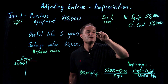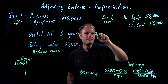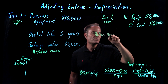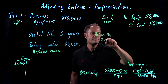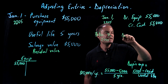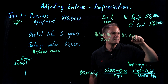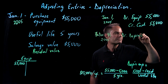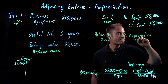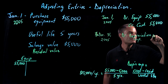So on December 31st, 2005, the company is going to debit Depreciation Expense for $10,000 — the annual amount.